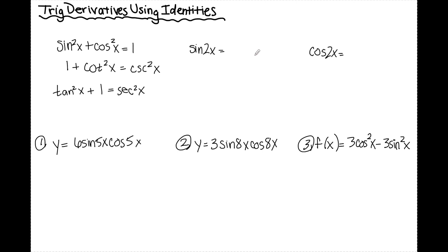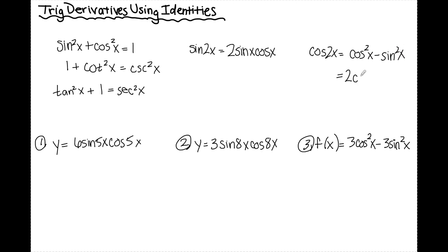The other identities we're going to look at are the double angle identities. Recall that sine of 2x is equal to 2 sine x cosine x, and for cosine 2x there are actually three formulas: cosine squared x minus sine squared x; 2 cosine squared x minus 1; and 1 minus 2 sine squared x.